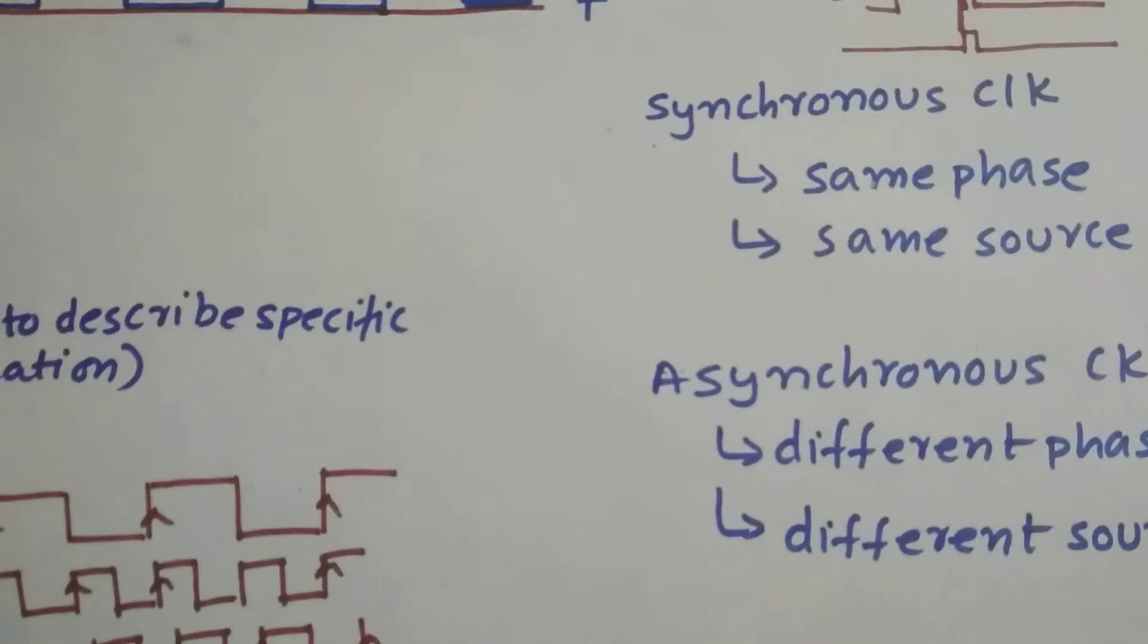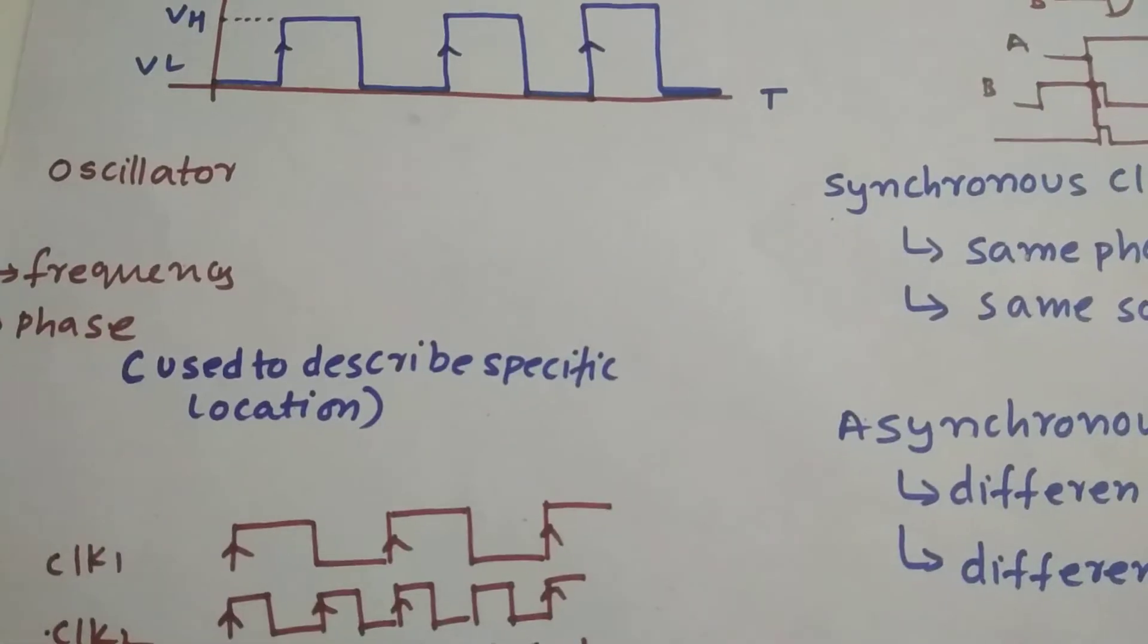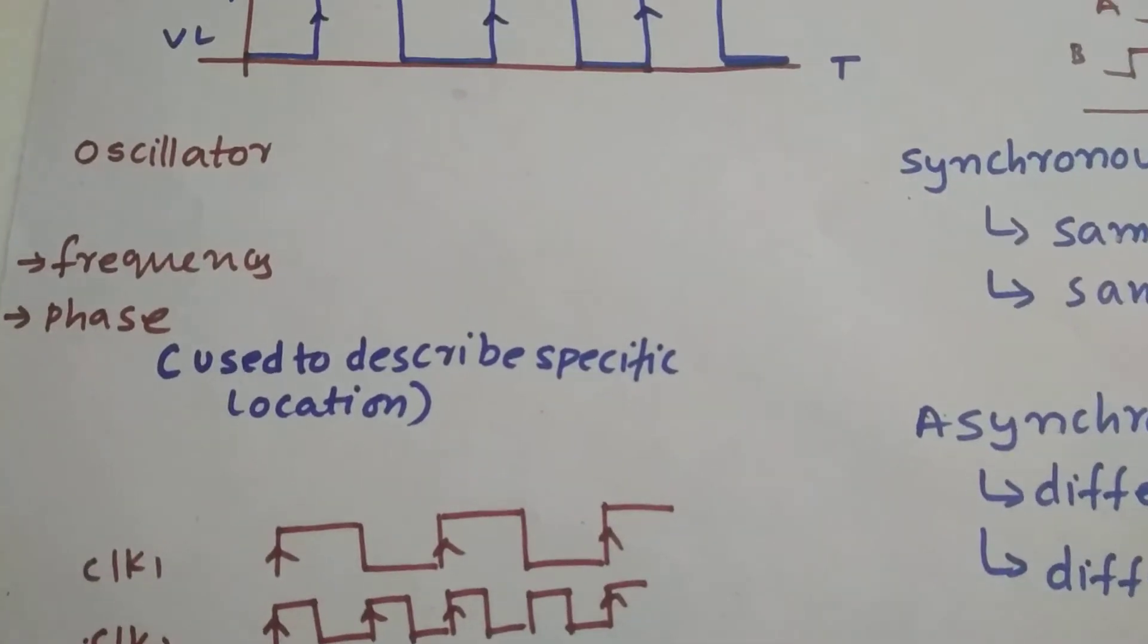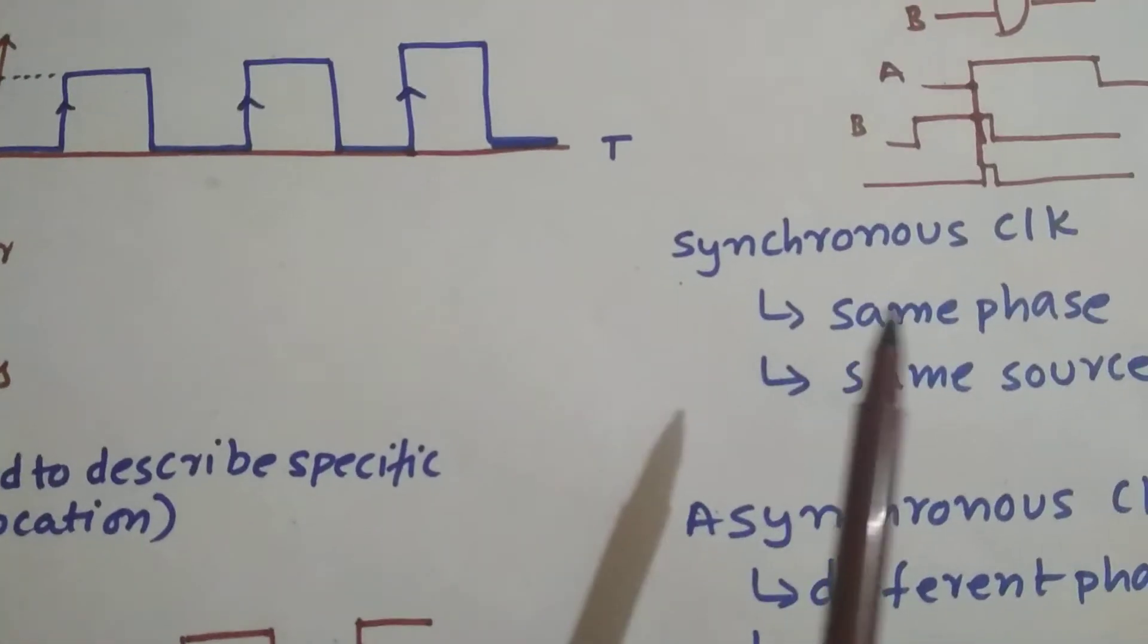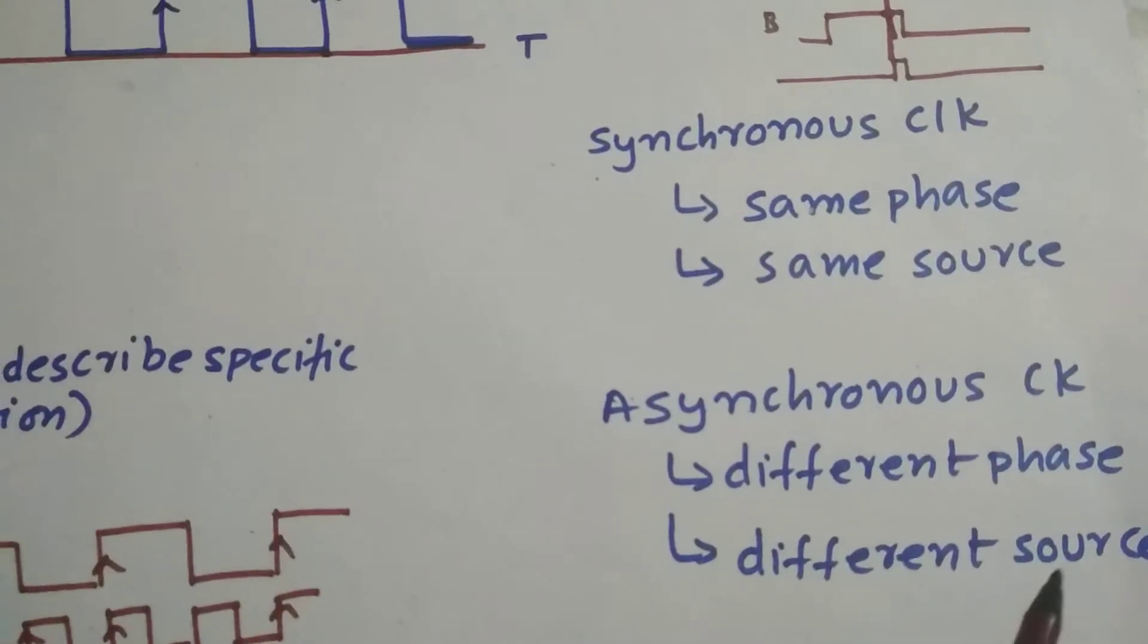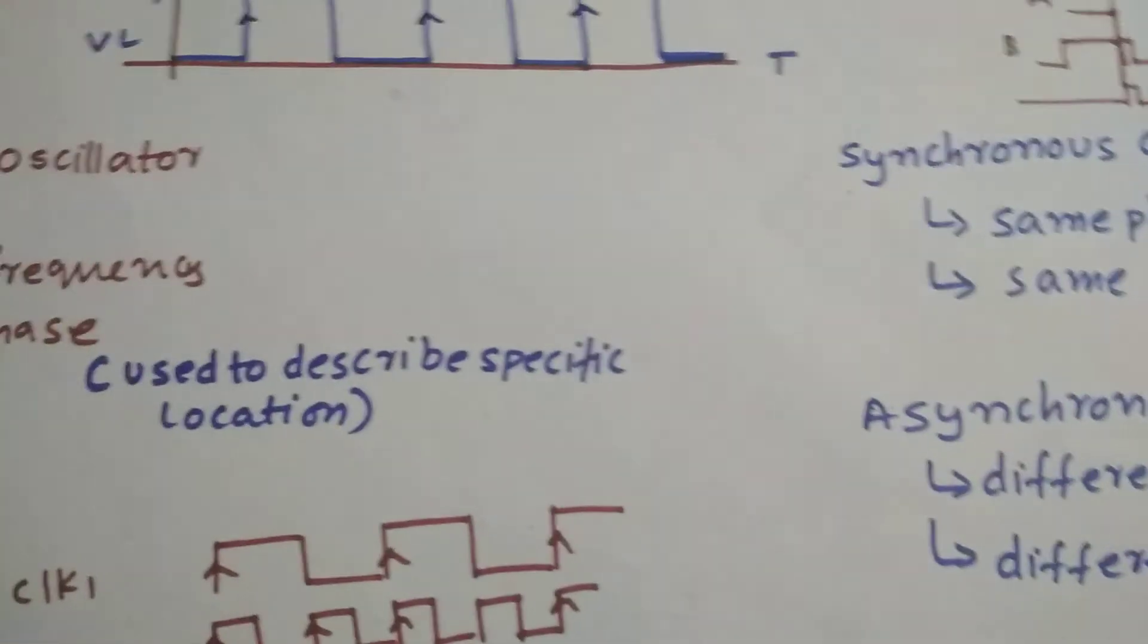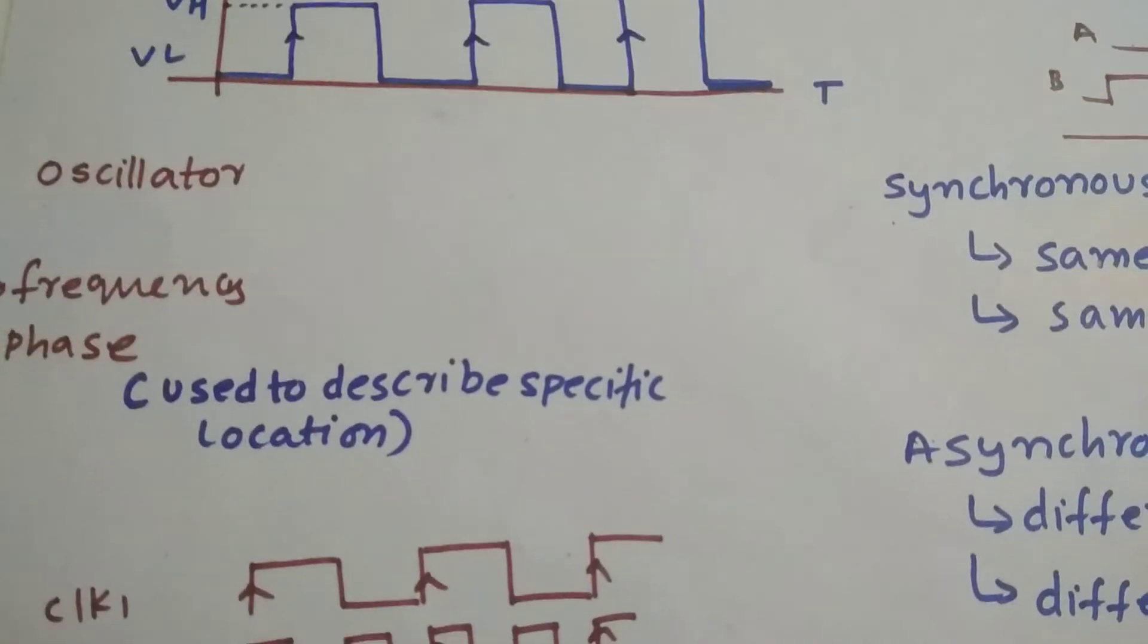So this is the difference between synchronous and asynchronous clock. Most people will say that synchronous means a single clock, asynchronous means two different clocks - that's not the correct way. The correct way is that if they are having the same phase and same source, then this is synchronous clock. Different phase and different source, then it's an asynchronous clock. Understand this point - this point is super important in various fields you're going to work. In digital, it's very important.